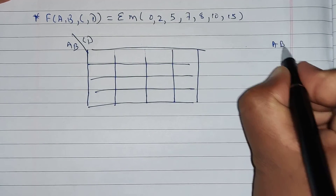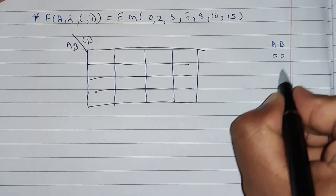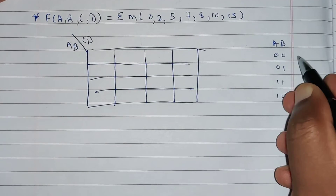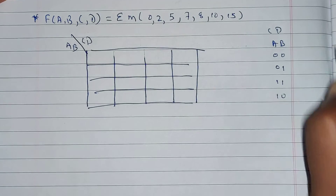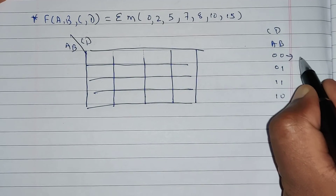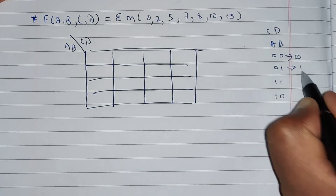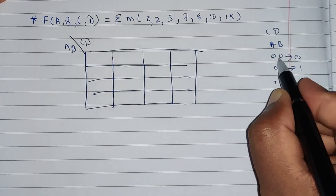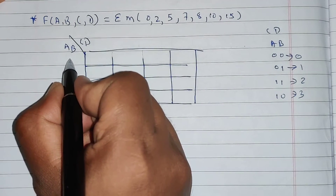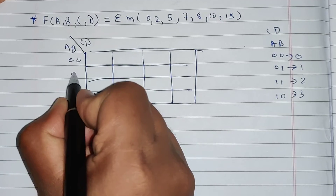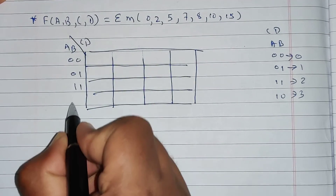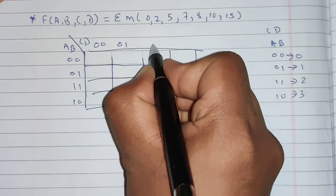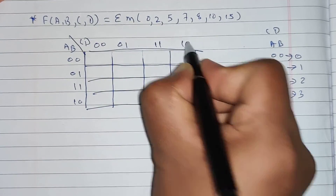a, b can take 4 Grey codes: 00, 01, 11, and 10. Similarly, c, d can also take these 4 values. These are Grey codes for 0, 1, 2, and 3. We will write down the values of a, b and c, d in Grey code along the rows and columns.